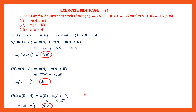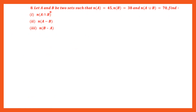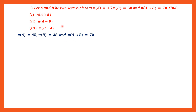I hope you have understood. When only cardinal numbers have been given, use the 6 formulae — it's very easy if you understand them; you must learn them by heart. Question 8: Let A and B be two sets such that the cardinal number of A is 45, cardinal number of B is 38, and the cardinal number of A union B is 70. This time A union B is given. We have to find the cardinal number of A intersection B — let's use the formula.